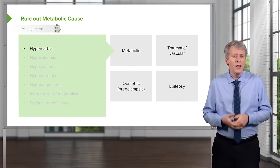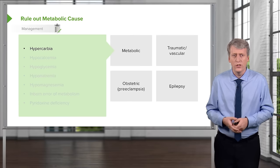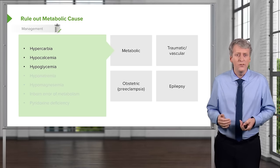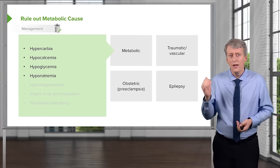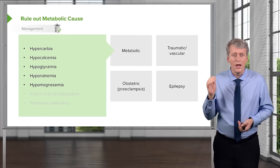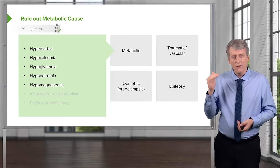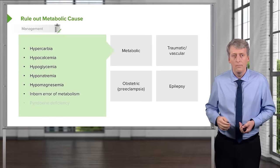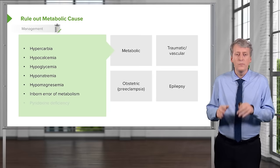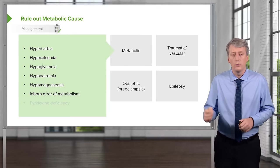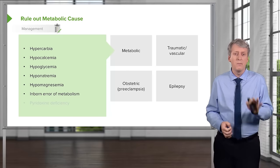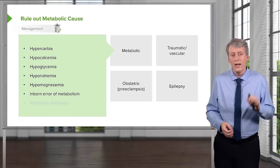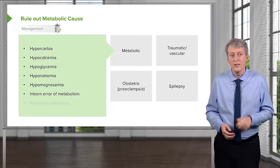There are many metabolic conditions that can present with seizures, such as hypercarbia and the hypos: hypocalcemia, hypoglycemia, hyponatremia, and hypomagnesemia — think calcium, glucose, sodium, magnesium. Inborn errors of metabolism may leave children prone to seizures, especially mitochondrial metabolic disorders like MELAS or MERRF syndrome.